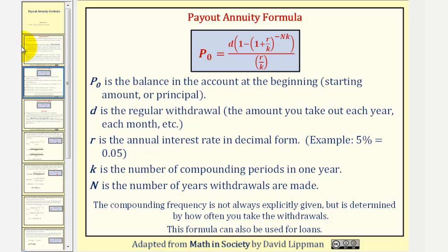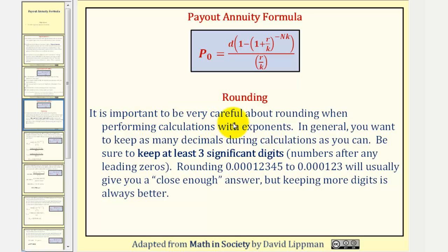Before we take a look at some examples, let's talk about rounding. It is important to be very careful about rounding when performing calculations with exponents. You want to keep as many decimals during the calculations as you can. Be sure to keep at least three significant digits, which means we include three numbers after any leading zeros.